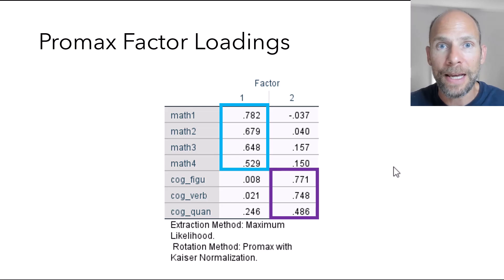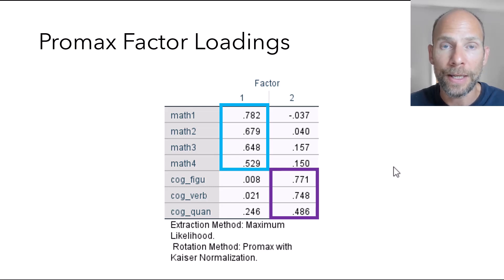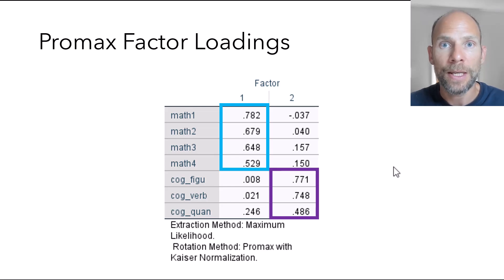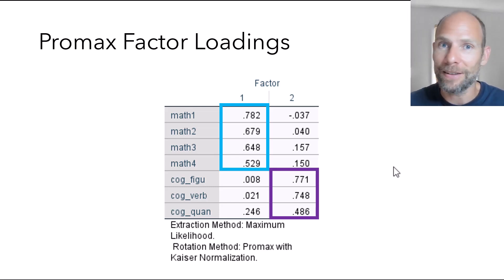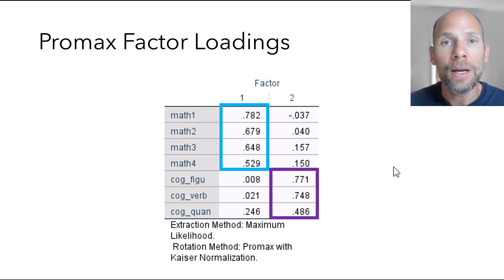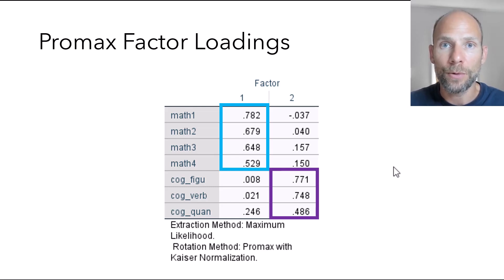In practice, unless you have a really strong theoretical reason to assume that your factors are uncorrelated, I would always prefer an oblique rotation method because it is more realistic that factors are at least somewhat correlated. Also, an oblique rotation doesn't force the factors to be correlated — if they don't want to be correlated, the correlation will just come out as zero or close to zero. So you're not losing anything by using an oblique rotation method, and it typically leads to a more adequate solution with better simple structure and more readily interpretable factors.